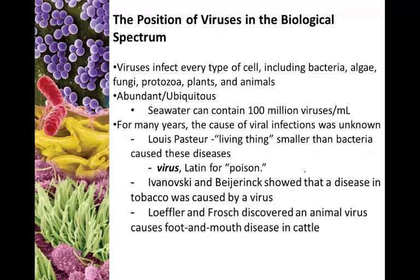Eventually two scientists actually isolated and showed viruses. Ivanovskiy and Bejerink showed that diseases in tobacco were created by a virus - specifically it's called tobacco mosaic virus, and it's one of the most commonly used and widely studied viruses today. Lofler and Feroche, around the same time, discovered an animal virus causing foot and mouth disease in cattle. This is not the same thing as hand, foot and mouth disease in people. But these were our first foray into viruses.